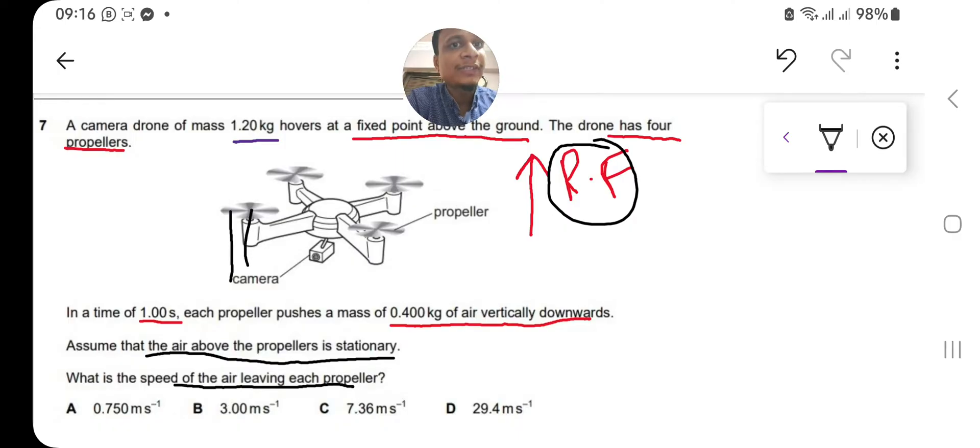After some time, the forces produced by the propellers will overcome the weight, and the leftover force will be used as a resultant force to travel the drone upward. They are asking what is the speed of the air leaving each propeller. We need to find the speed of this air leaving the propeller.